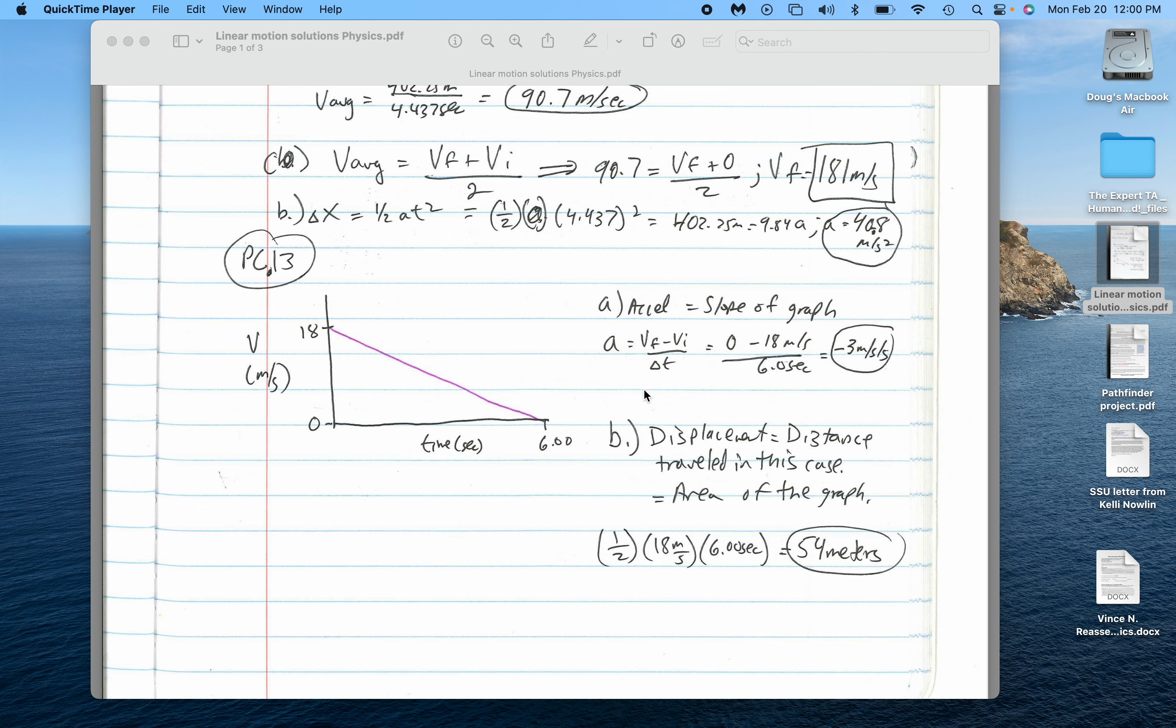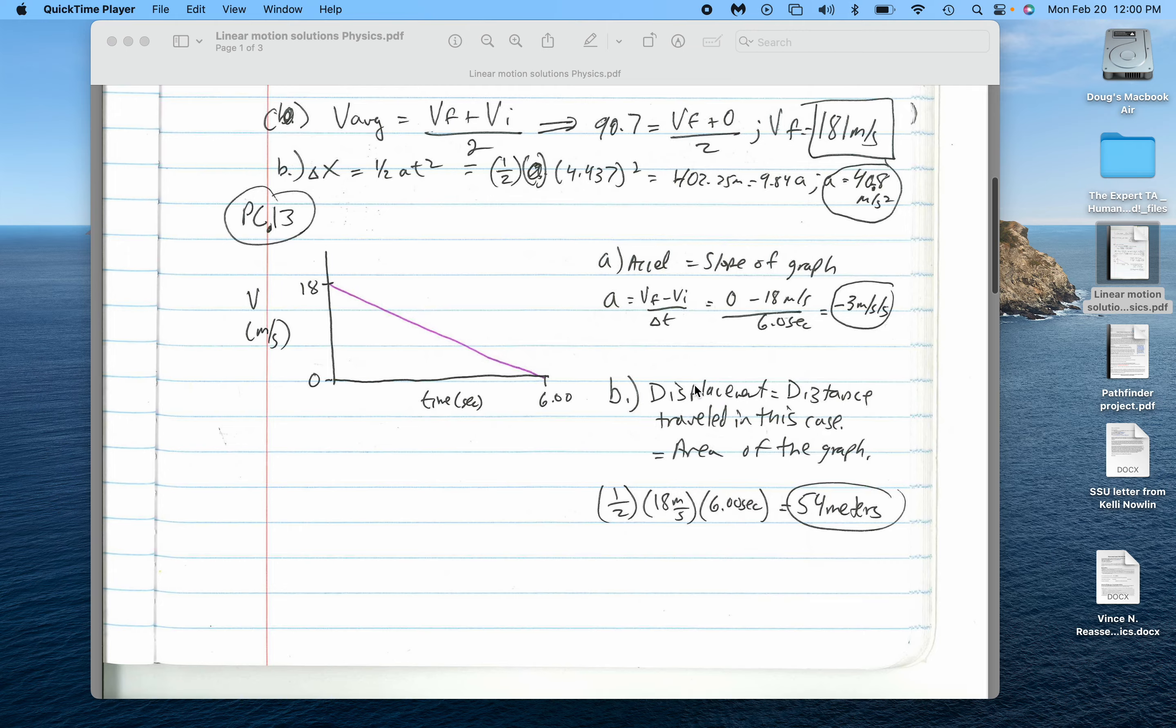This formula is the slope of the velocity-time graph. It ends at zero, starts at 18. So you have negative three meters per second per second as the acceleration.